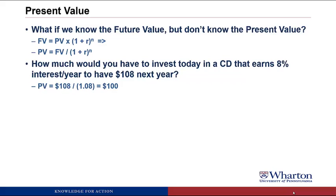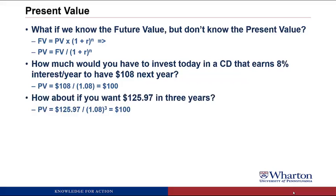This is what we saw in the prior video with future values — if you had $100 today and invested it at 8% per year, it would grow to $108 at the end of the year. We're just reversing that calculation. Similarly, what if we wanted $125.97 in 3 years? Using the formula, the present value equals $125.97 divided by 1.08 raised to the 3rd power, because it's 3 years. The present value is $100 — just the reverse of what we saw last video, where $100 today grows to $125.97 in 3 years.